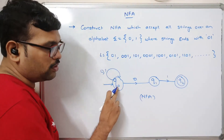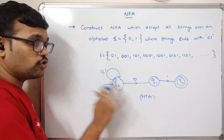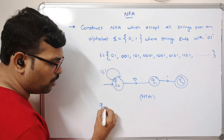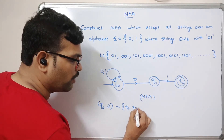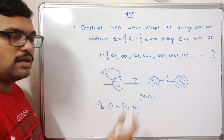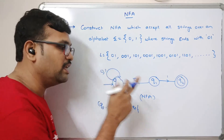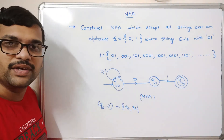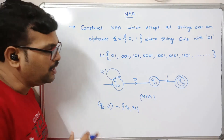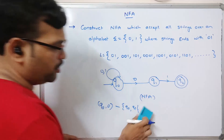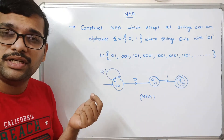In DFA, we must specify a transition for every input symbol at every state. In NFA, Q-naught on 0 can move to Q1 or remain at Q-naught — multiple paths are possible depending on the string, and the automaton decides which state to move to. This multiple-path behavior is not allowed in DFA, where there must be exactly one path. NFA is much easier to construct than DFA.